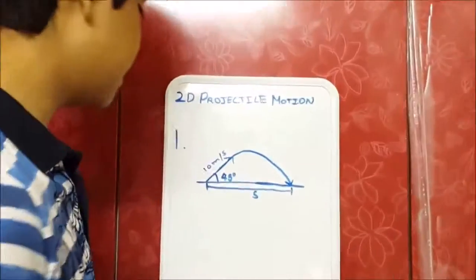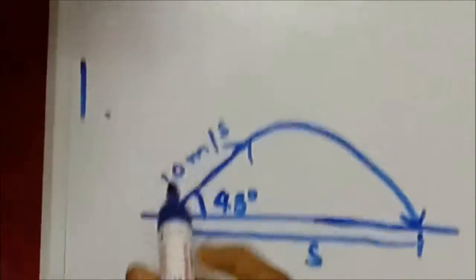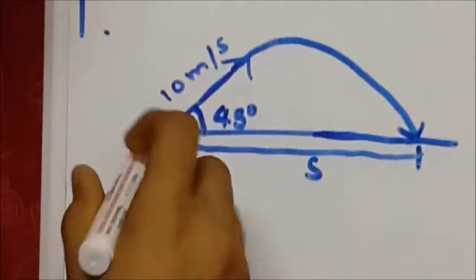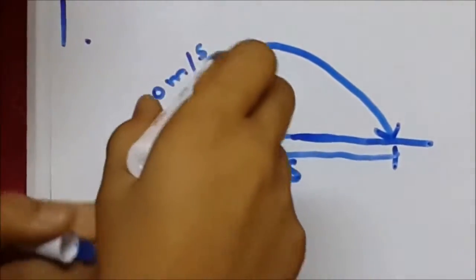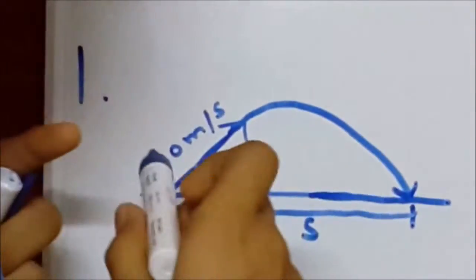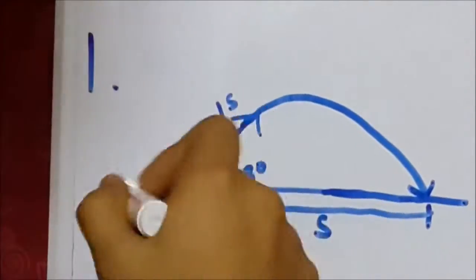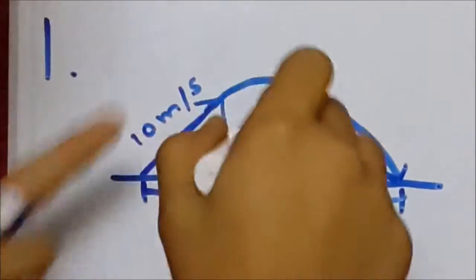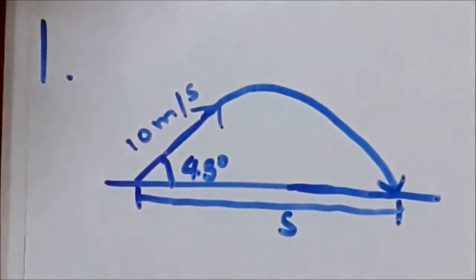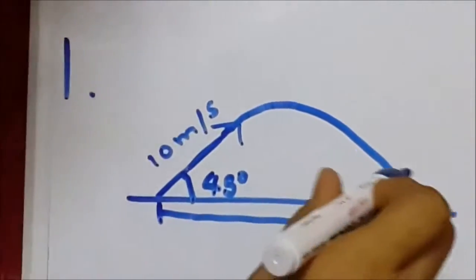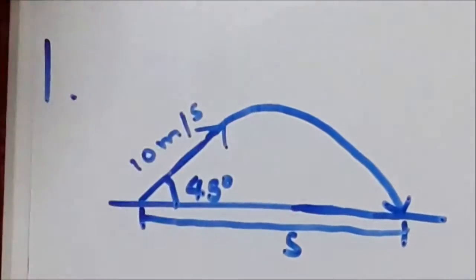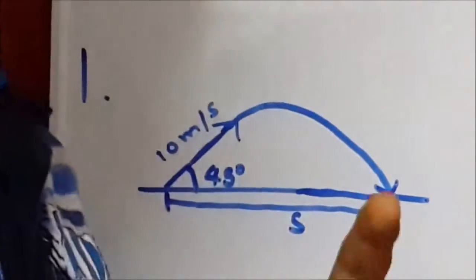Let's get started with our first problem. Now in our first problem, we have a projectile which is being launched with a velocity of 10 meters per second, 45 degrees inclined to the horizontal, launched at an angle of 45 degrees. And it goes and it lands at the same level because it's a flat ground, remember.